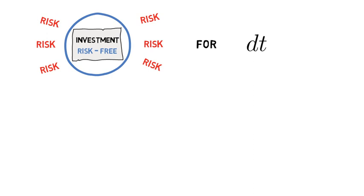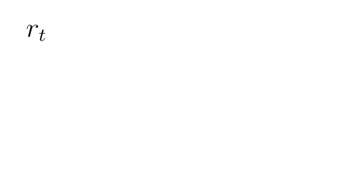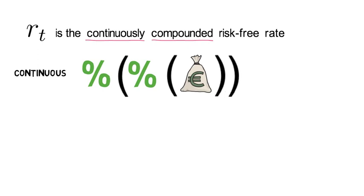Yet the investment is risk-free for the next instant dt. That is because in t you know what you will have earned if you reach the time period t plus dt. Also note, r_t is the continuously compounded risk-free rate that says that you are receiving continuous interest on interest on your savings.